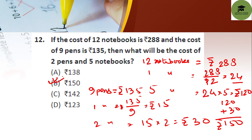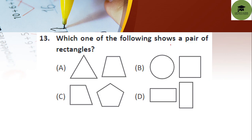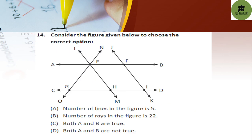Next question: which one of the following shows a pair of rectangles? If you see, option A is a triangle, option B is a trapezium and a circle, option C is a square and a pentagon. Option D shows two rectangles, so option D is your correct answer — these are a pair of rectangles.